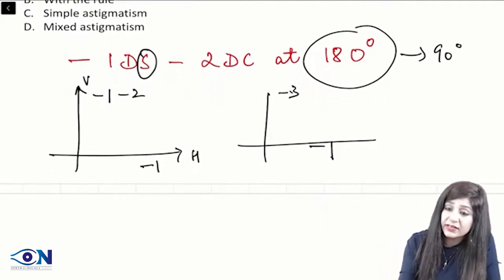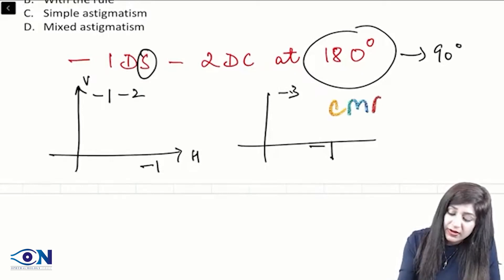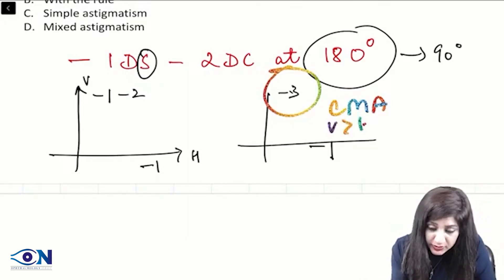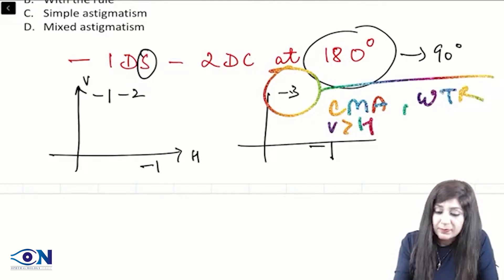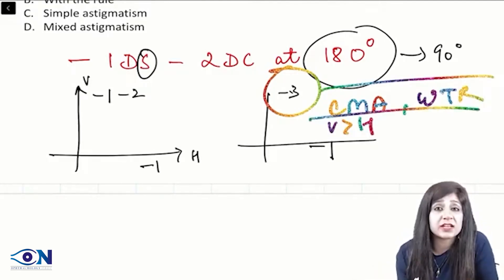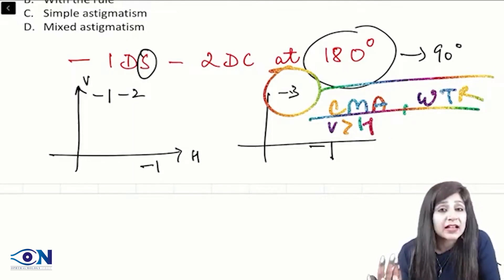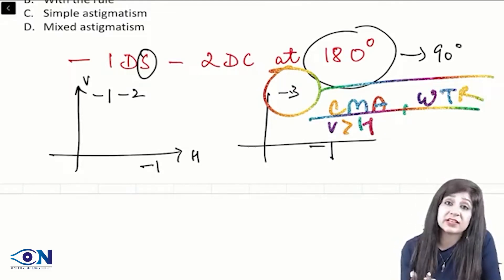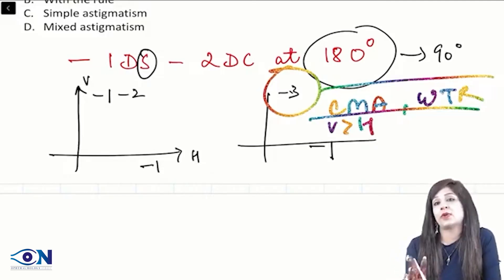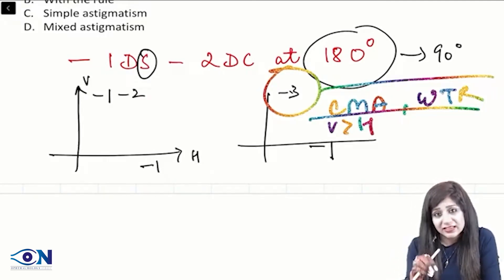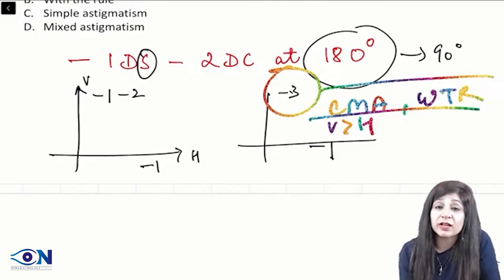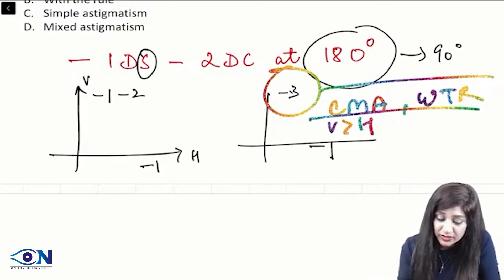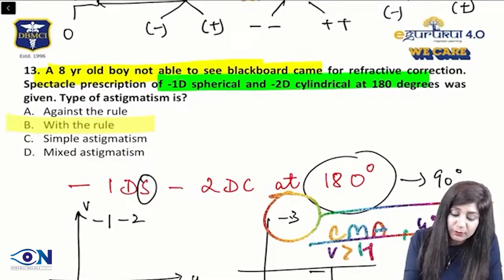We now have minus 3 at vertical and minus 1 at horizontal — both minus, so this is compound myopic astigmatism. Minus 3 is more than minus 1, and vertical is more than horizontal, therefore it is with-the-rule astigmatism. Answer: compound myopic with-the-rule astigmatism. This is a high-yield predicted question for NEET PG 2025 and upcoming similar examinations.